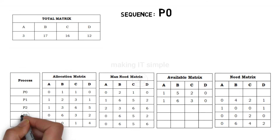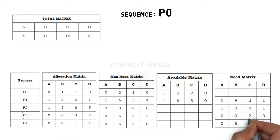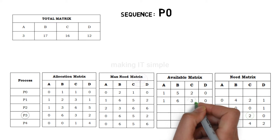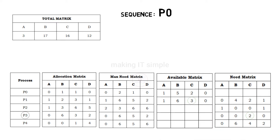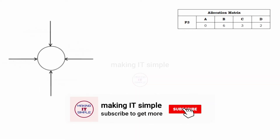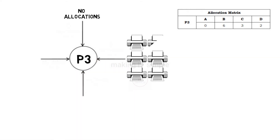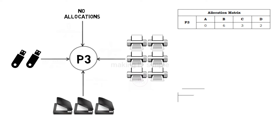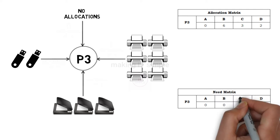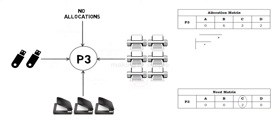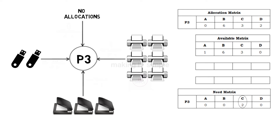Let us check for process P3. Process P3 requires only 2 instances of resource C, and we have 3 instances of C left. So we can fulfill the need of process P3. According to the allocation matrix, process P3 already has 6 instances of resource B, 3 instances of resource C, and 2 instances of resource D. According to the need matrix it requires 2 more instances of resource C, and we have the availability according to the available matrix.